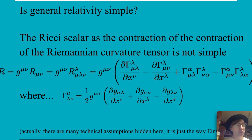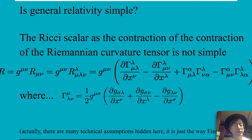Is general relativity simple? You've got the Ricci scalar, which is a contraction of the Ricci tensor, which is a contraction of the Riemann curvature tensor — which is not simple, because that's the difference between derivatives of the Christoffel symbol of the second kind and the difference of two different products of Christoffel symbols. The Christoffel symbol itself is a contraction of three different derivatives, giving second-order derivatives of metric tensors that transform like a tensor. That's not a simple thing at all.